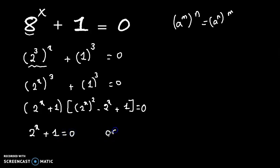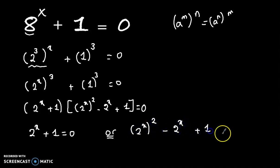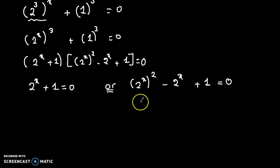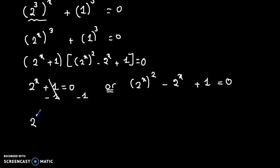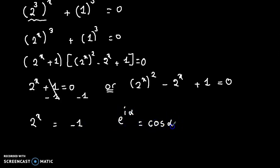Or 2 to the power x, squared, minus 2 to the power x, plus 1, equal to 0. From the first factor, subtracting 1 from both sides gives 2 to the power x equal to minus 1.